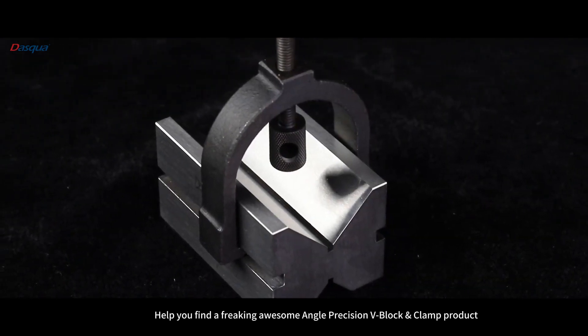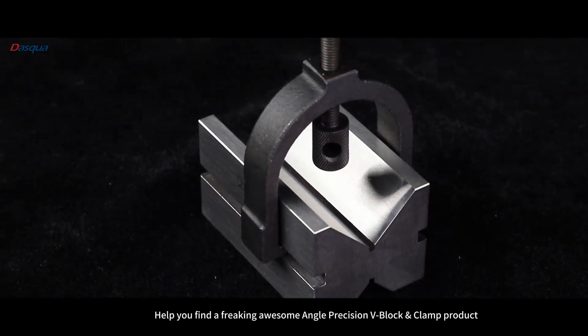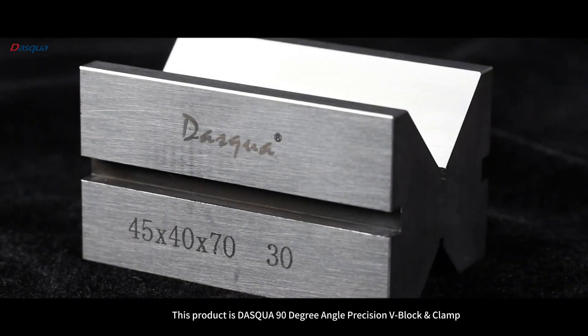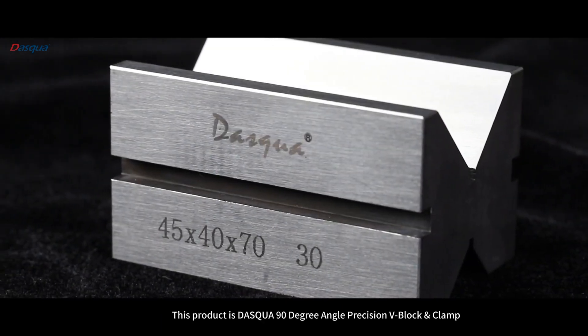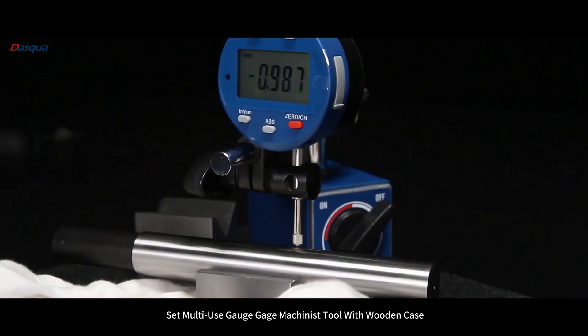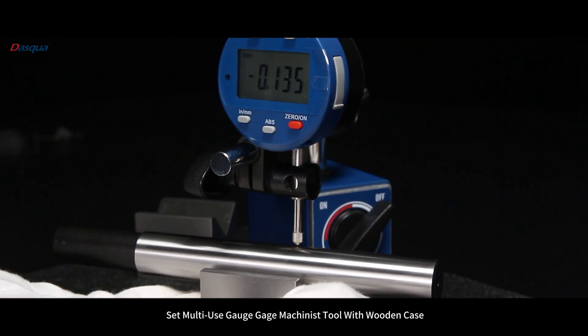Help you find a freaking awesome angle precision v-block and clamp product with sales increasing three times every year. This product is Dear SQU, a 90-degree angle precision v-block and clamp set, multi-use gauge machinist tool with wooden case.